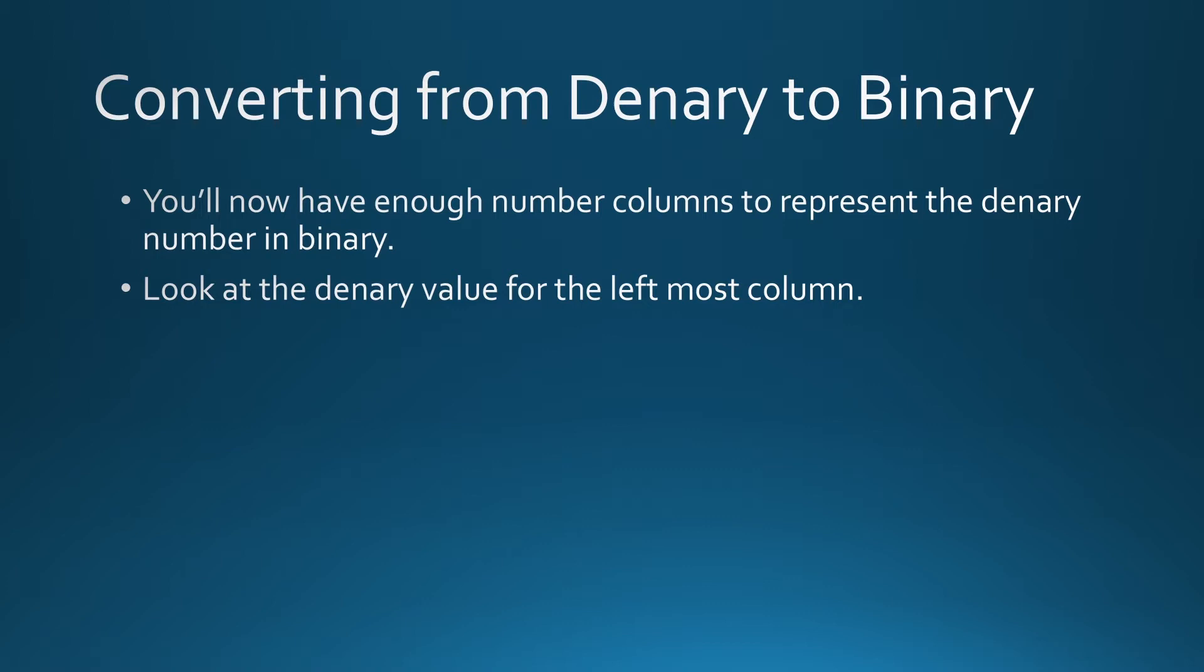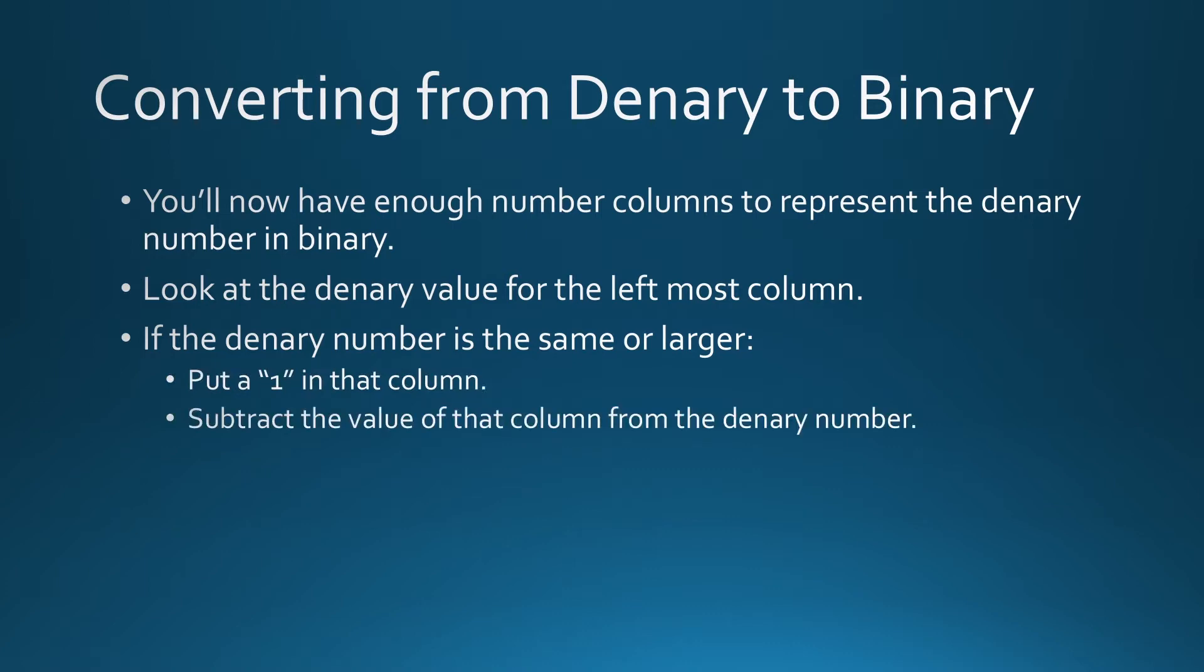If that number is the same or larger, well then you know you can put a 1 in that column. Then what you do is, whatever the value of that column is, subtract it from the denary number. So for example, if the number was 12 and you were looking at the column which was 8, you'd put a 1 in there and then take the 8 from the 12, which will leave you 4 left to carry on and find columns to put in. And that's what you do.